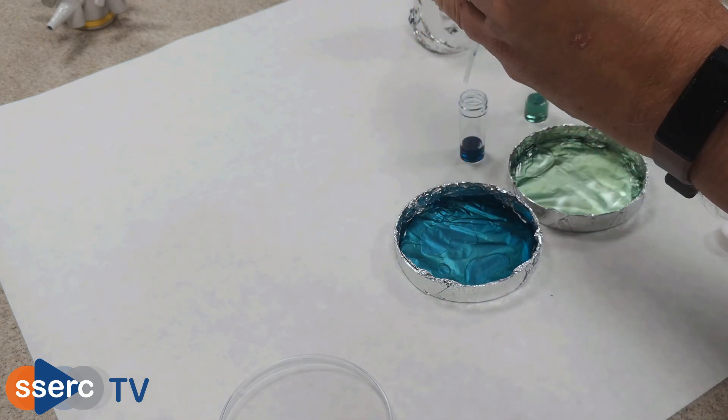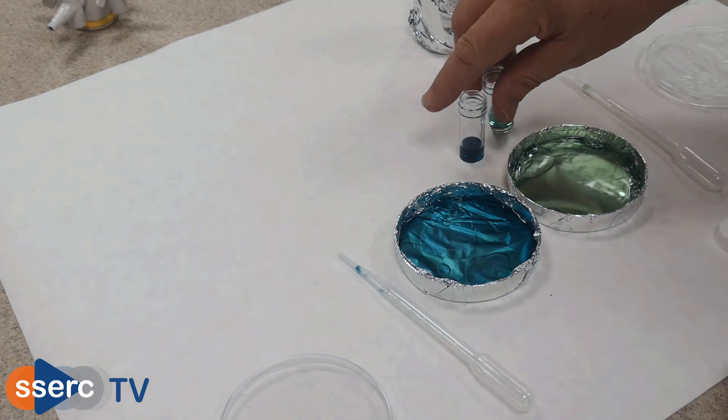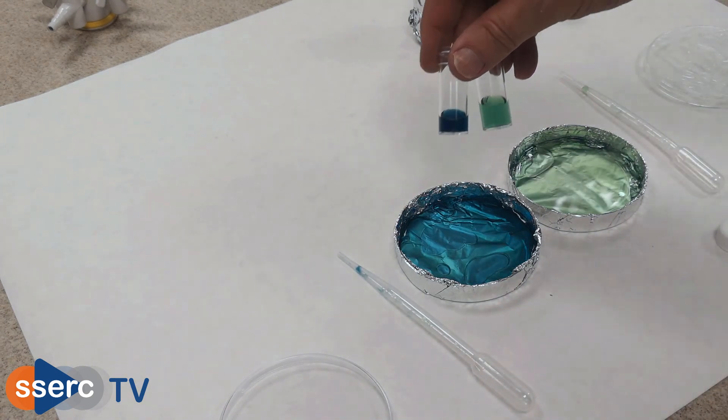If you place a cover or just some foil over the dishes, it will prevent any further colour change while you're getting things ready.